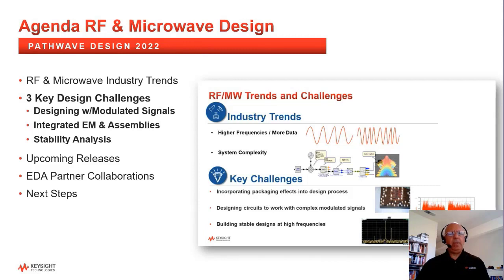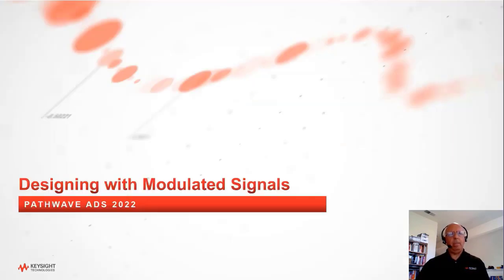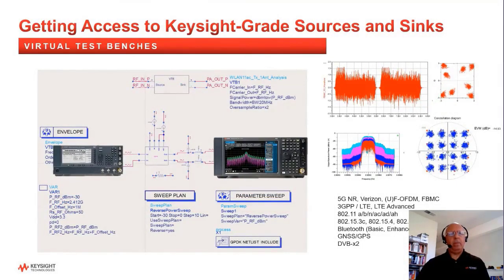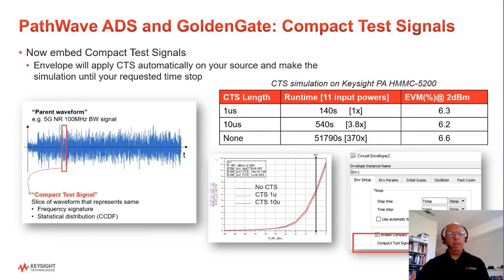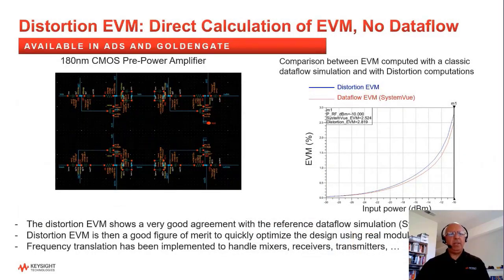I'll start with designing with modulated signals. For many years, we've had solutions to verify designs to digitally modulated standards with a verification or virtual test benches, which use Keysight's spec-compliant sources and measurement syncs for Keysight instrument-grade accuracy. And now, ADS and Golden Gate have two new envelope simulation capabilities. Compact test signals and distortion EVM calculations without the need for data flow simulation. These dramatically speed up simulation, making designing with modulated signals possible, not just verifying with them. I've asked my colleague, Cédric Pujol, to give you a demo.